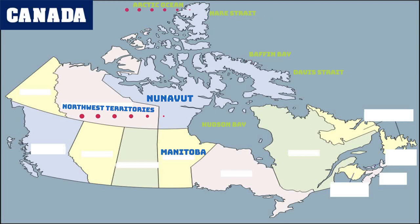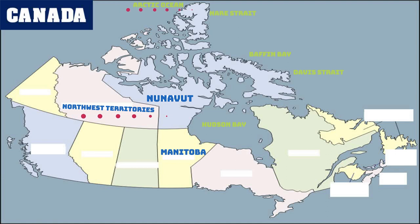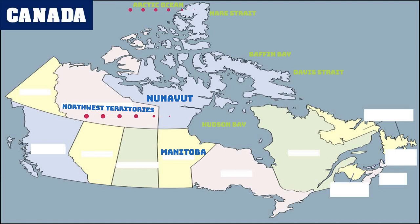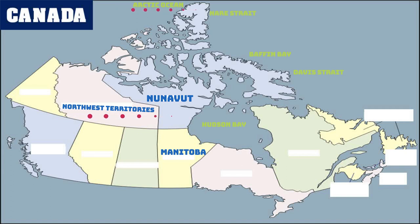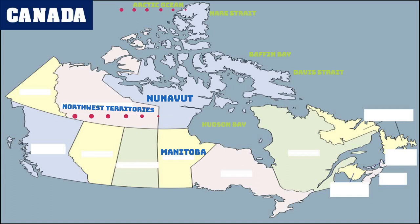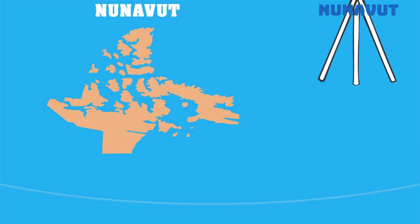In the west, Nunavut shares boundaries with the Northwest Territories. To the north of Nunavut is the Arctic Ocean.